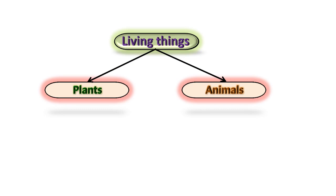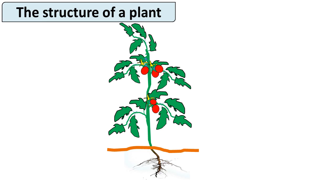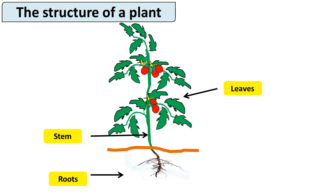First, we will learn about plants. Whenever we go outside, we see a variety of plants in our surroundings. Like us, plants also have different parts: roots, stem, leaves, flowers, and fruits. We are going to study all these parts one by one.